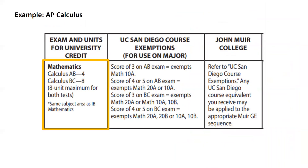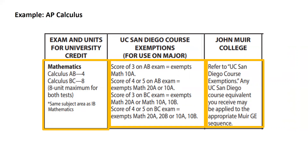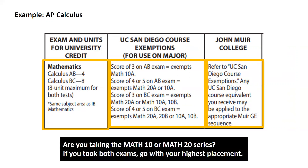The last AP exam that we want to mention is AP Calculus. There are two different exams: Calculus AB and Calculus BC. Either exam can be applied towards a Muir Math Natural Science GE theme, and depending on your score, you can get one or two courses applied to your GE theme. If you are planning on taking more math courses for your major requirements, then your AP Calculus exam can serve as your math placement. To move forward, you need to know if you're pursuing the Math 10 or the Math 20 series, which is determined by your major requirements. If you took both exams, pay attention to the exam that grants the highest placement for the math series you are pursuing.